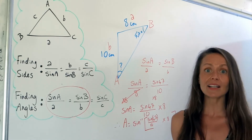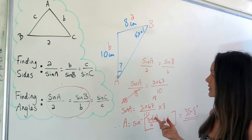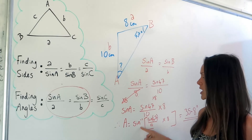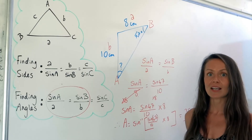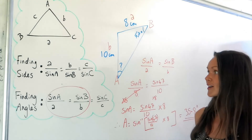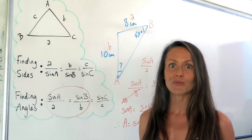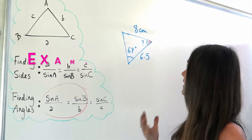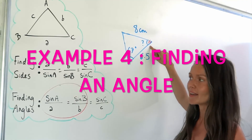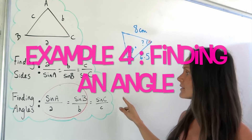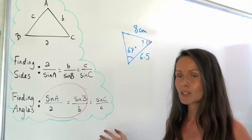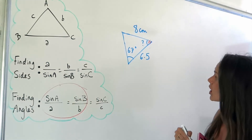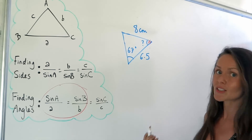It was exactly the same as finding a side — there was just one more step at the end: remember to use sine minus 1 before putting everything into the calculator. In this last question, I'm calculating an angle again, so I need the angles-as-numerators version of the sine rule.